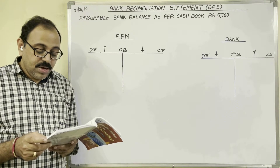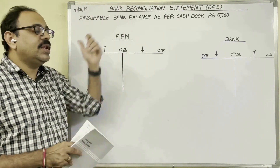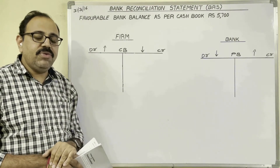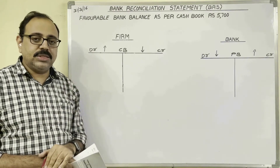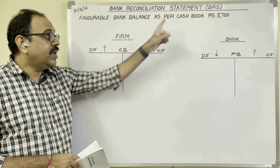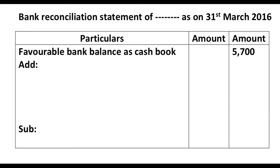On 31st March 2016, my cashbook showed a bank balance of 5700. The bank balance is given, meaning on this date we are preparing the BRS. He is not specifying whether it is a favorable or overdraft bank balance. In the absence of any information, our assumption is this is a favorable bank balance. As per the cashbook, we have to start the solution with favorable bank balance as per cashbook. The heading is: Bank Reconciliation Statement of Dash (firm's name not given), as on 31st March 2016. Three columns: particulars, inner amount column, and outer amount column. Favorable bank balance as per cashbook — in outer column, 5700.